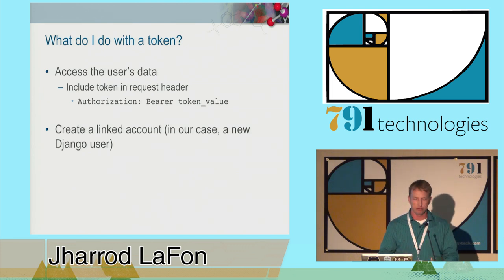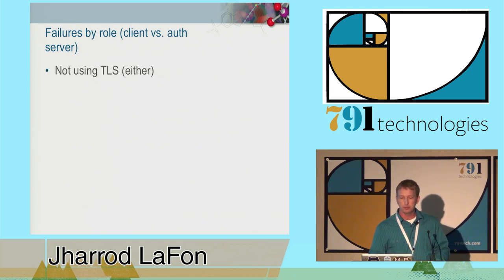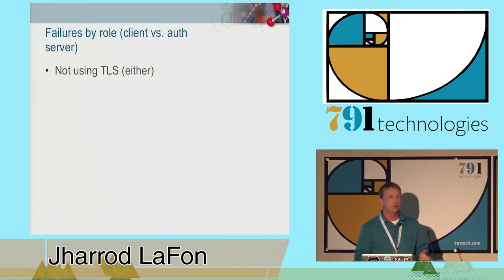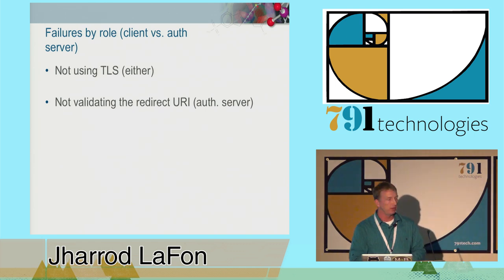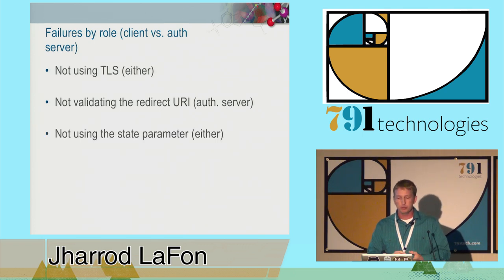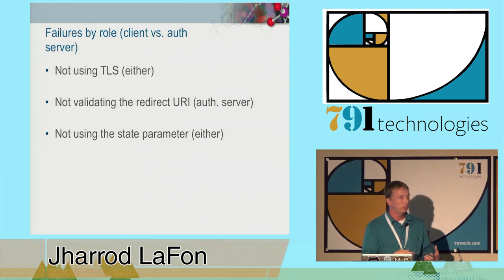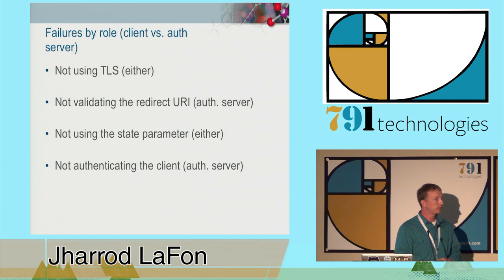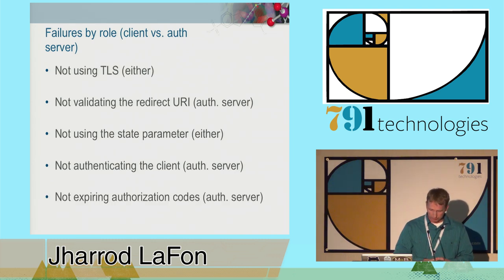Now that we've seen how to use the authorization code flow, how can it fail? If either party—the client or the authorization server—doesn't use transport layer security, then all bets are off. If the authorization server does not validate the redirect URI, an authorization code can be leaked to an attacker. If either party doesn't use the state parameter and verify it to be correct, you're vulnerable to cross-site request forgery attacks. If you don't authenticate the client, a leaked authorization code can be used to get an access token. And finally, if you don't expire authorization codes, you're subject to replay attacks.